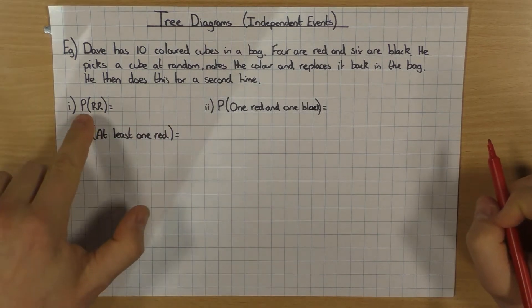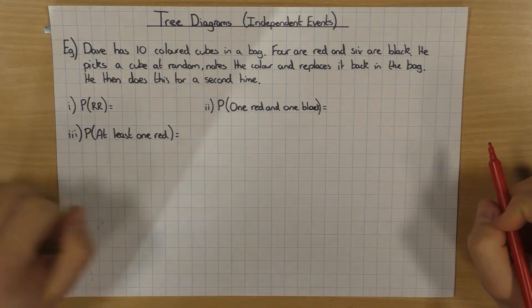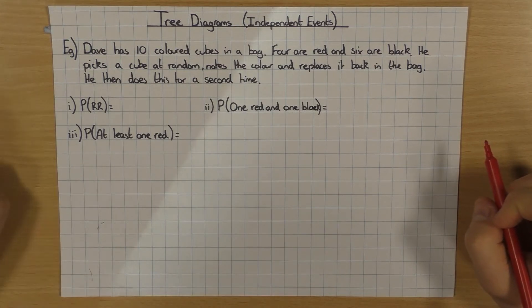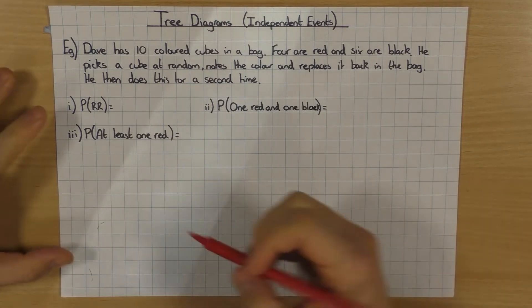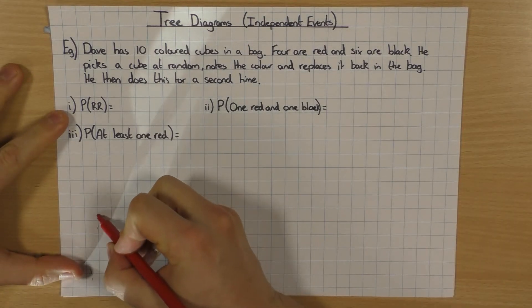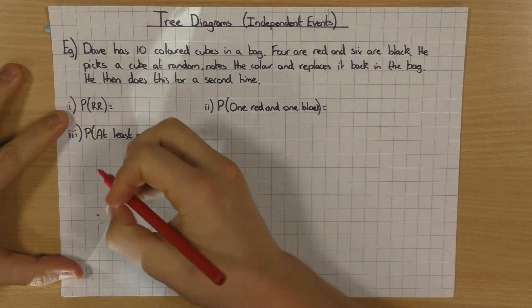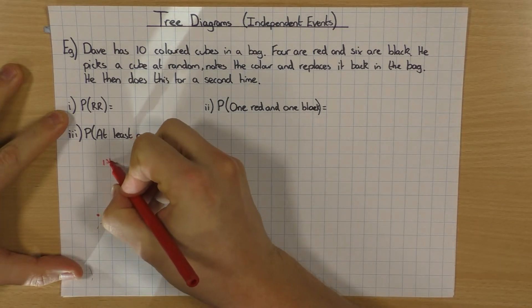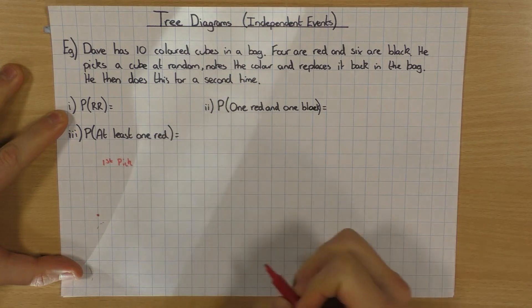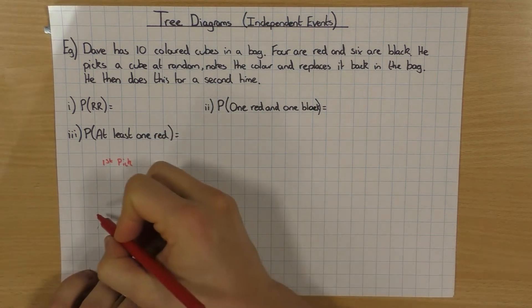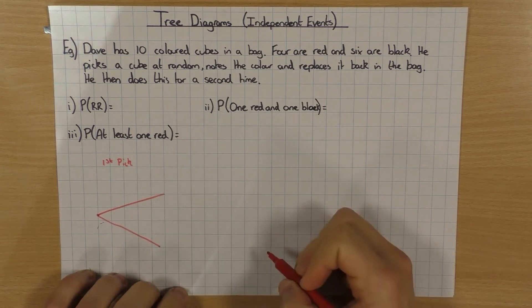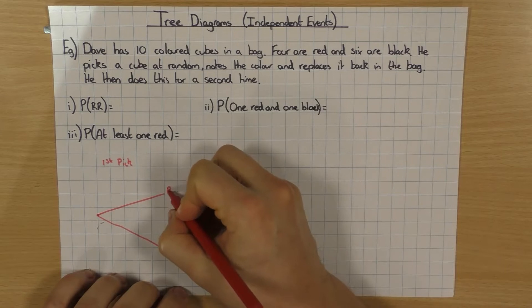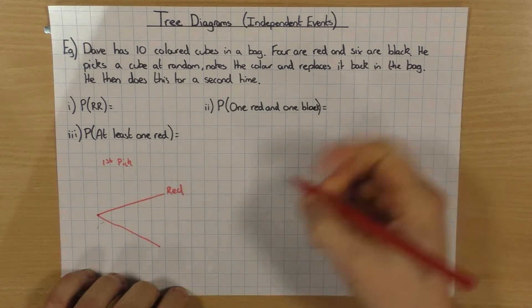What we can do when we've got a question like this — asking for the probability of getting red-red, one red and one black, or at least one red — is we can draw a tree diagram. It pretty much just looks like a branch of a tree. For the first pick, he's got two outcomes, so I draw two branches.